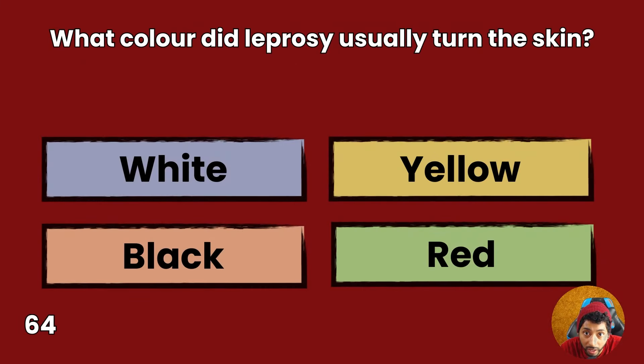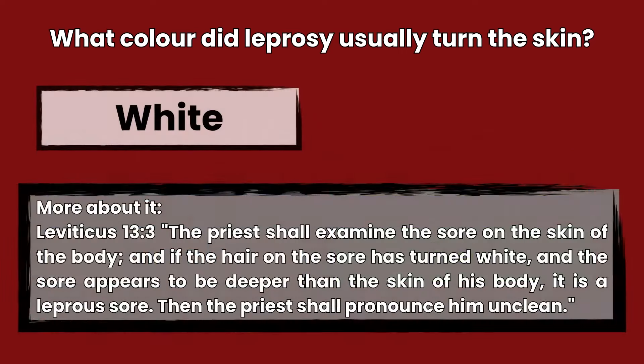Question 64: What color did leprosy usually turn the skin? White, yellow, black, or red? Answer: White. Leviticus 13:3 — The priest shall examine the sore on the skin of the body, and if the hair on the sore has turned white, and the sore appears to be deeper than the skin of his body, it is a leprous sore. Then the priest shall pronounce him unclean.